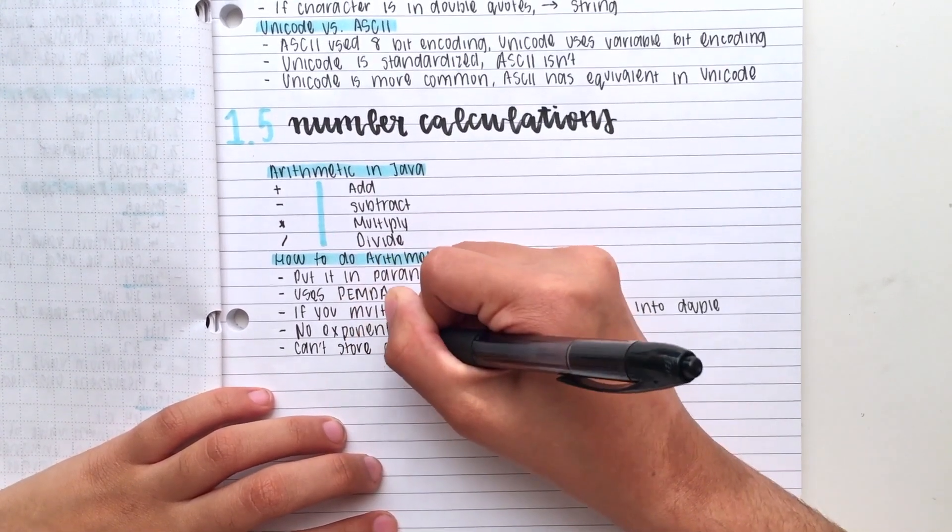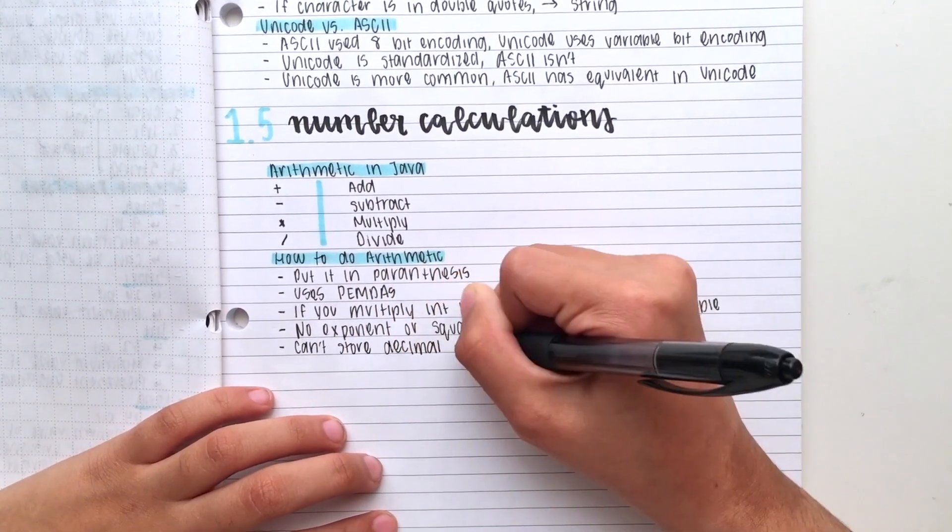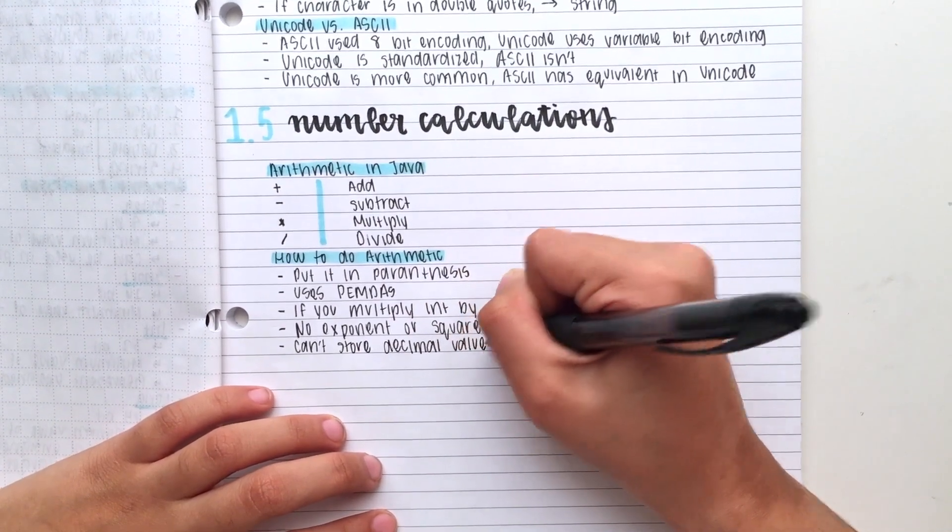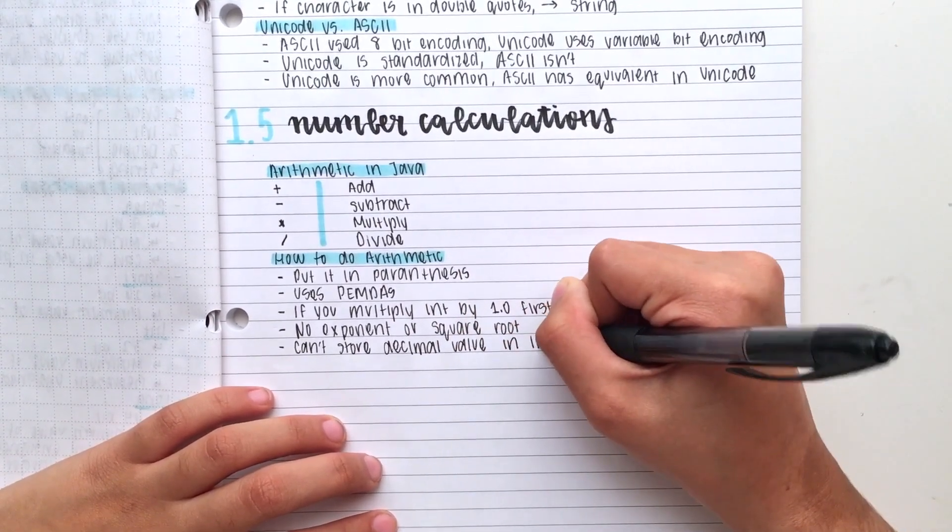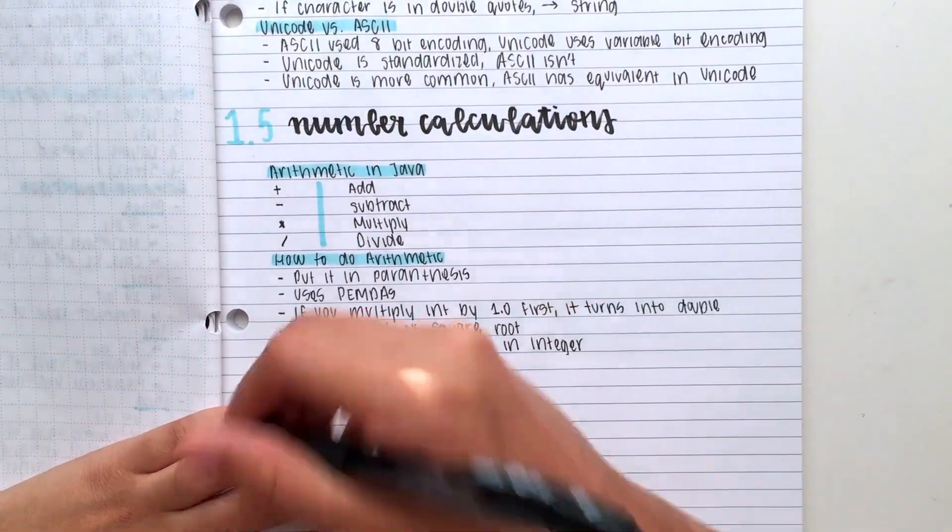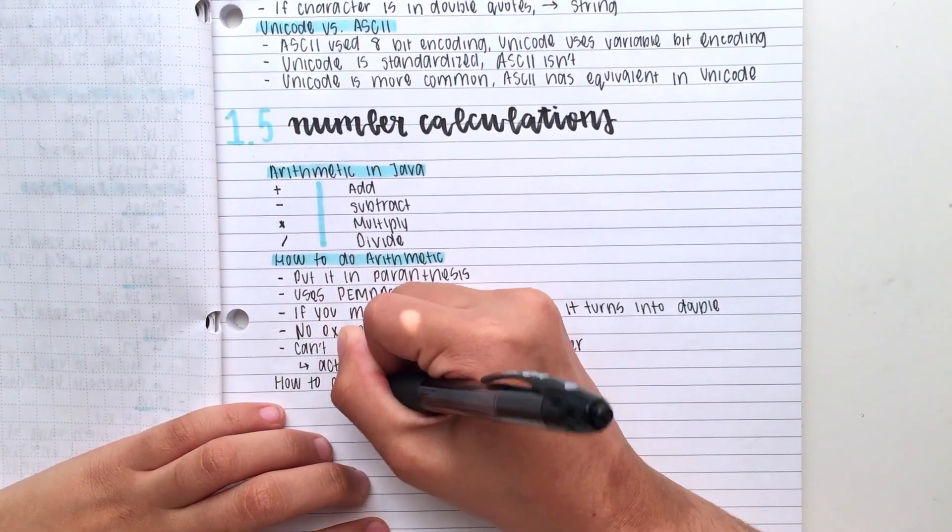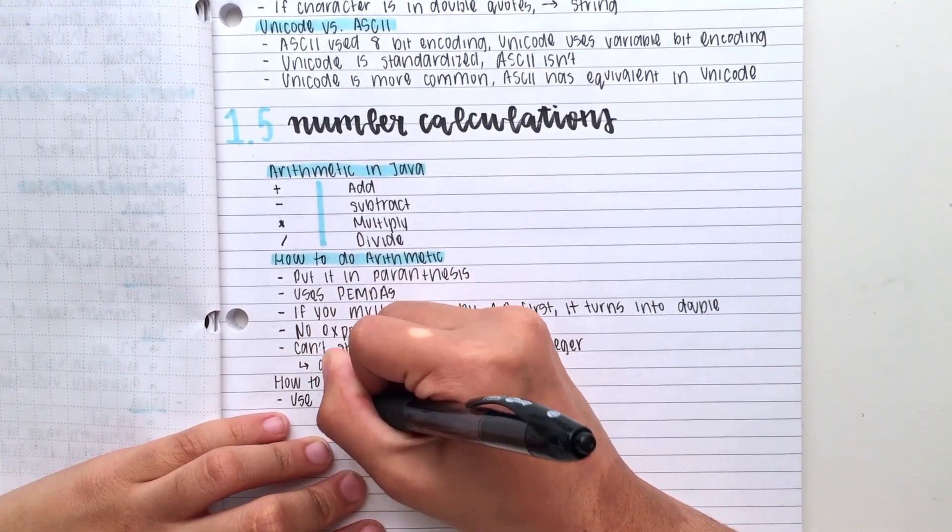One thing that I'm doing for these notes is writing questions or the name of the topics, and then making bullet points under those. And then, after that, I go in and highlight the question or topic name.